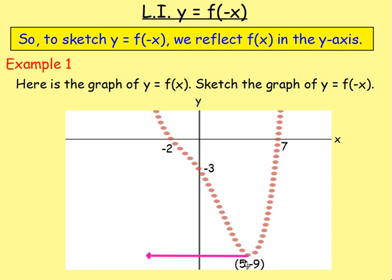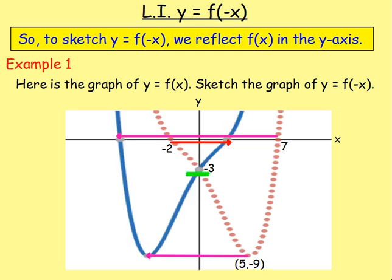You need to think about every single point. So the point (5, -9) will be reflected over — it'll come over here. The point at x equals 7, if you reflect that over, 7 will become negative 7. The point at x equals negative 2, if you reflect that over, it'll come up to positive 2. And the point at negative 3 — because that's on the y-axis, if you reflect it over, it's still going to be on the y-axis, so that would just remain there. Your new graph will look something like that.